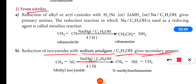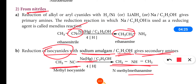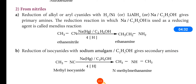Nitriles and cyanides, when reduced, form primary amines. But when isocyanides are reduced using sodium amalgam in alcoholic medium, secondary amines are formed. For example, if you take methyl isocyanide, it will form N-methyl methanamine.